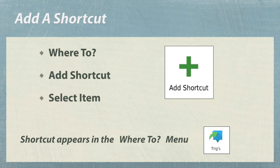To add a shortcut, simply go to the Where To menu. Tap on the Add Shortcut icon, which is a green cross. Select the desired item, and you are done. It will be added to your Where To menu and assigned the appropriate icon.